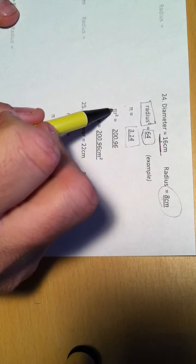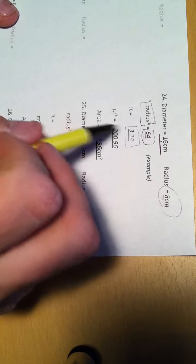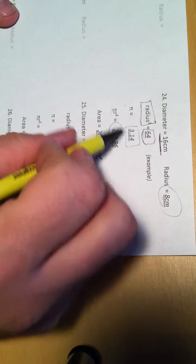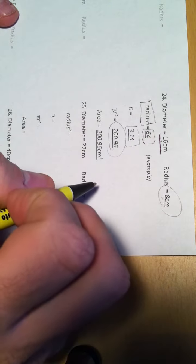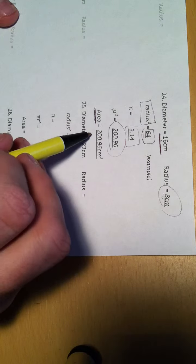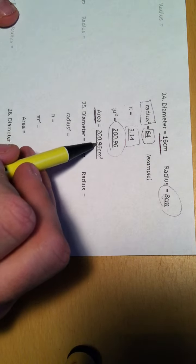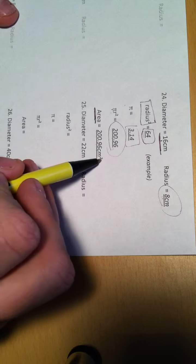So, what is 3.14 times 64? So, I got 200.96. And then, finally, answer the question. What is the area of our circle? 200.96 centimeters squared.